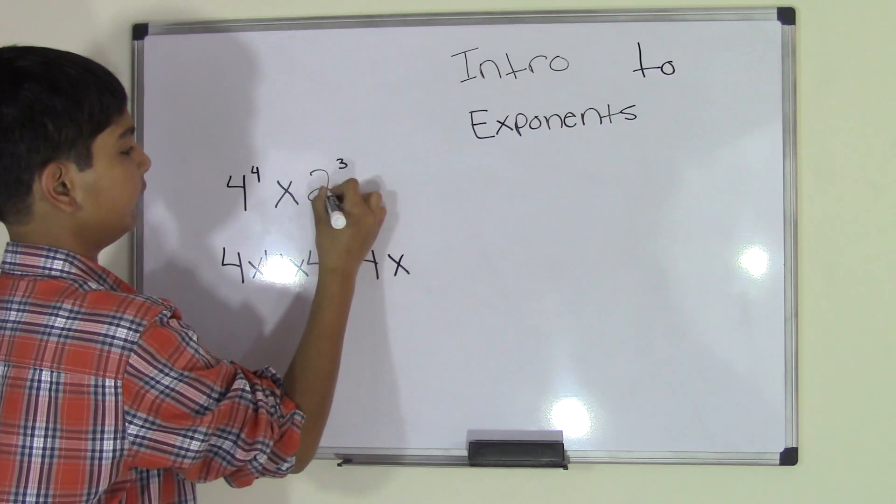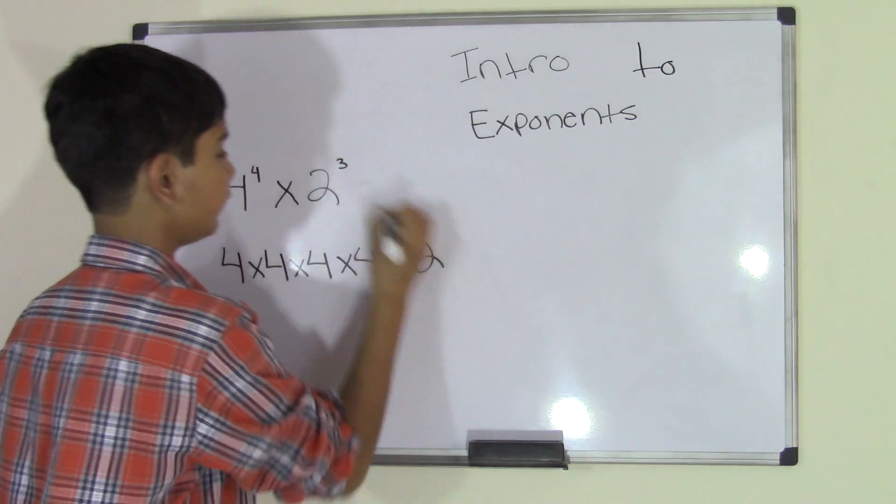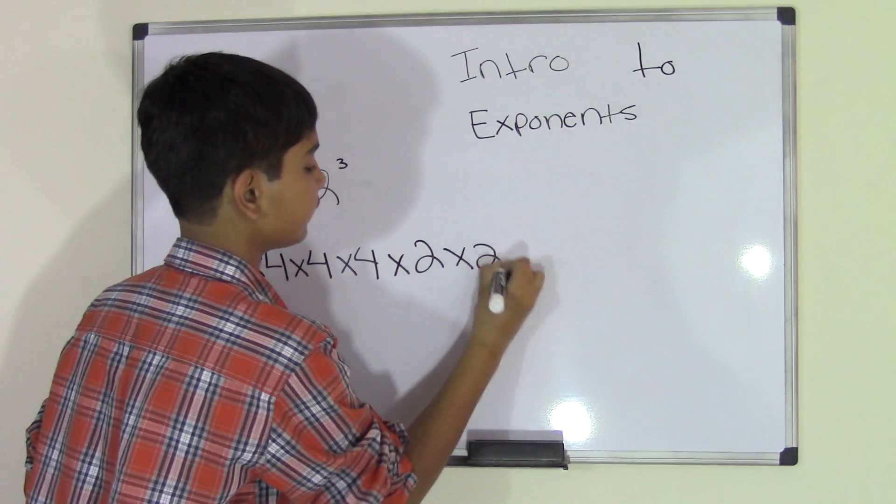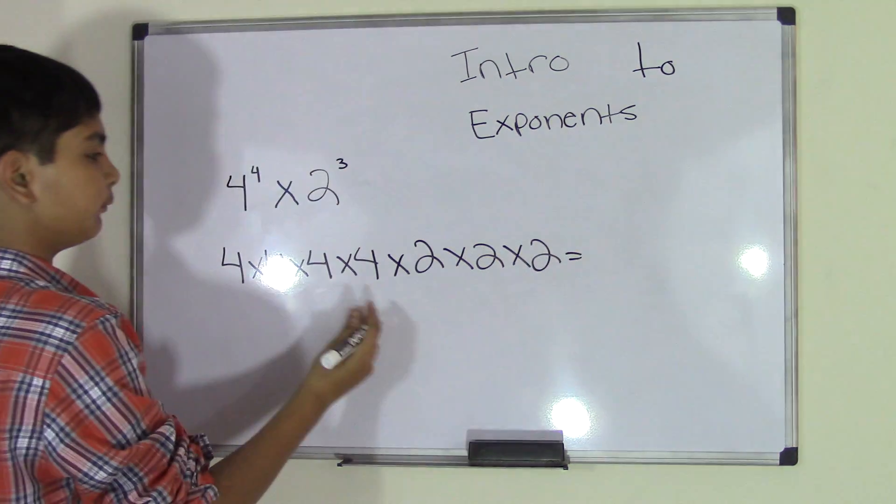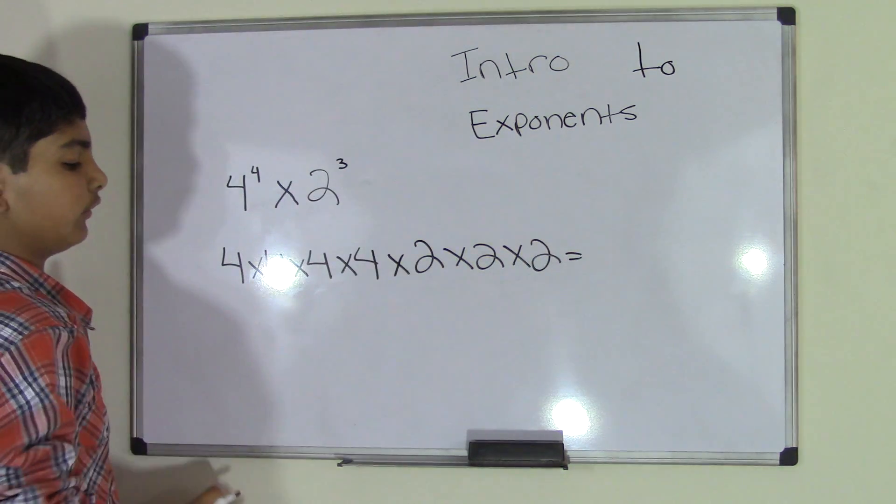And then times that by 2, 3 times. So 2 times 2 times 2. And this is the real form of this exponential problem.